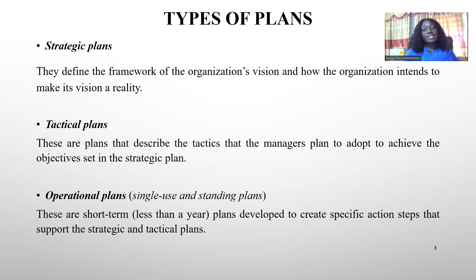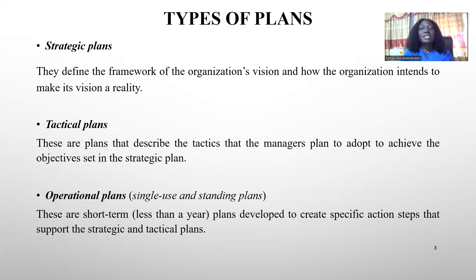The next type of plans is tactical plans. These are the plans that managers adopt to achieve the objectives set in the strategic plan. There's a strategic plan by the top level — the top level makes strategic decisions — and any decision made at the top has to be broken down to the level of other people in the organization. That's what we call the tactical plans.